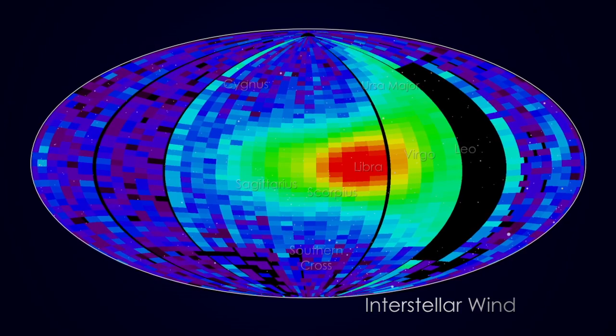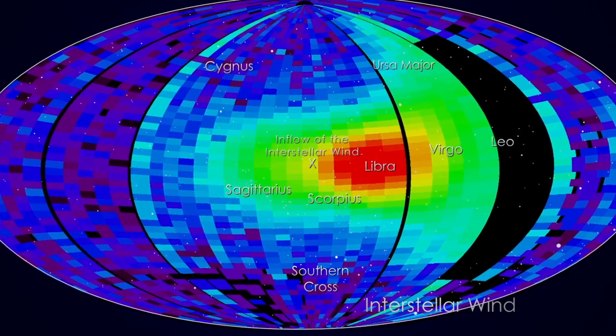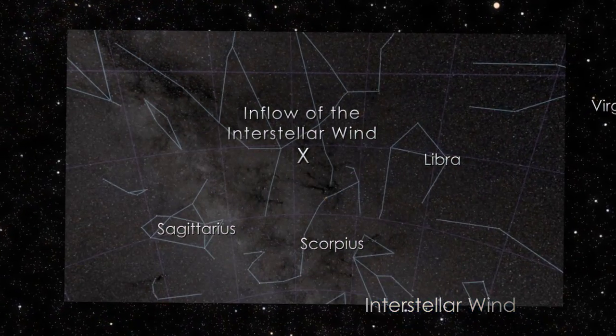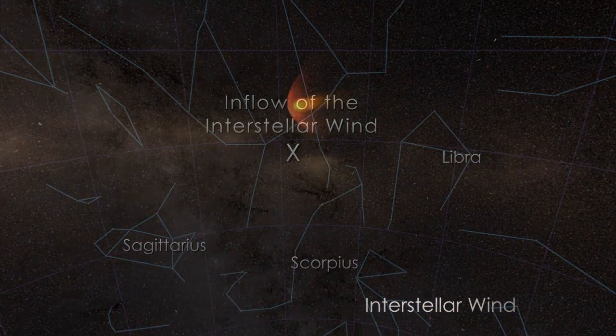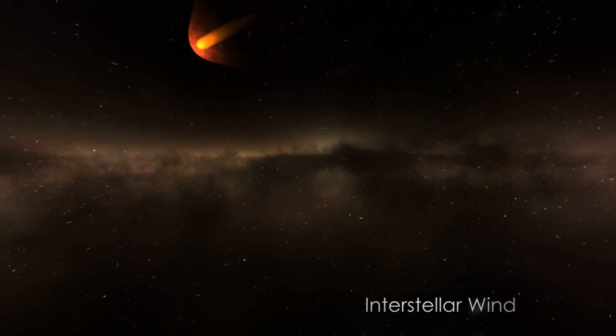Recent measurements of the interstellar wind by IBEX have shown that its direction is changed by about 7 degrees in only the last 40 years. While the cause of this shift is unknown, it may be telling us something about the changing conditions as we move through the Milky Way.